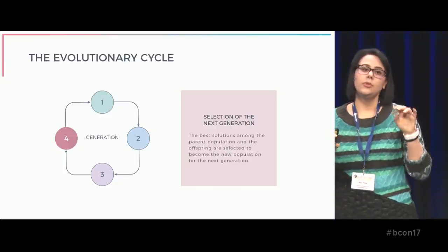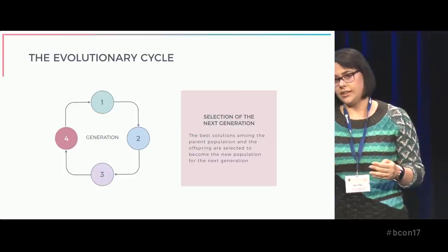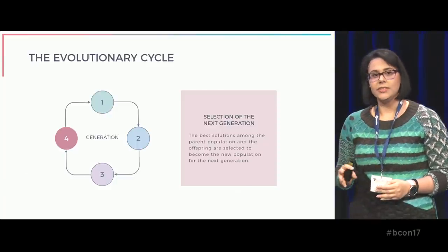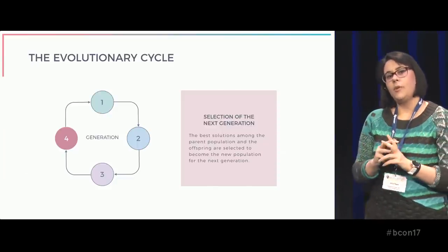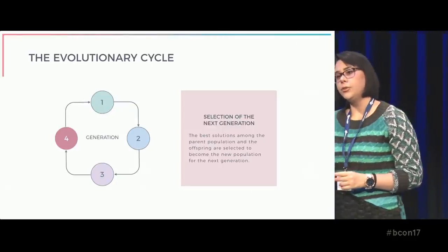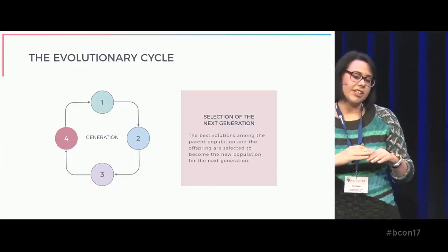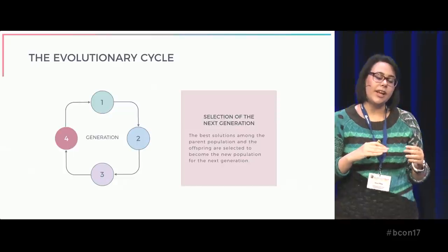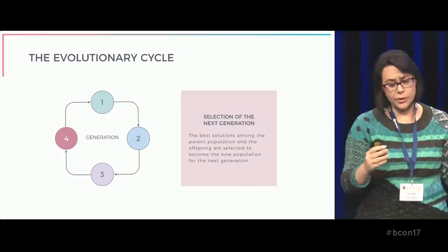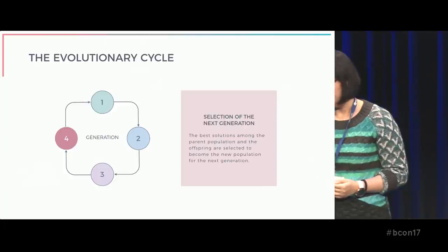At this point, we have two groups of individuals: the initial population of the generation and the offspring. The final step of the generation is the selection of the best individuals among the union of these two groups. The result is the new population of the next generation. Generally, the average fitness value of the population will have increased generation by generation. Usually, the evolutionary cycles stop iterating when a maximum number of generations has been produced.